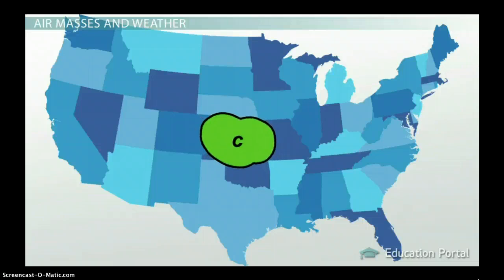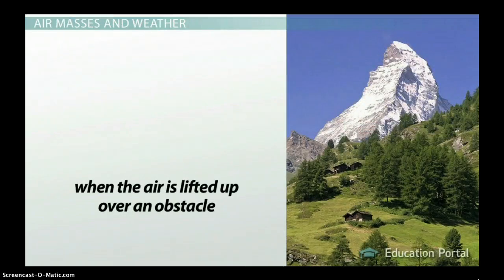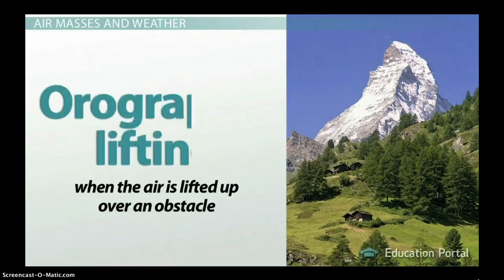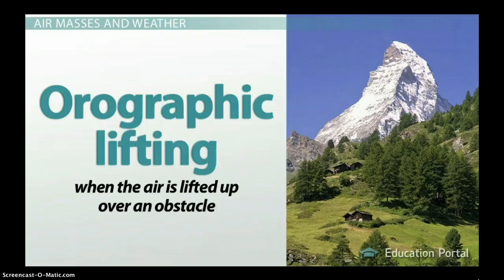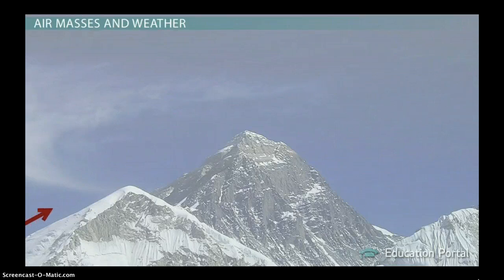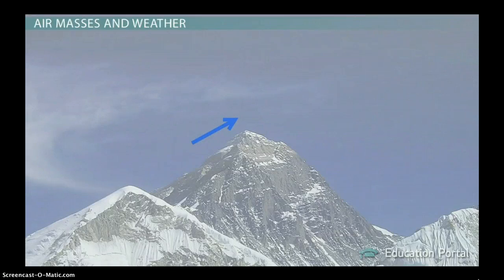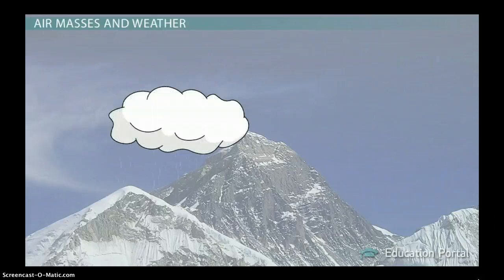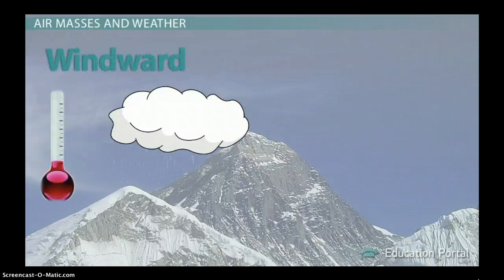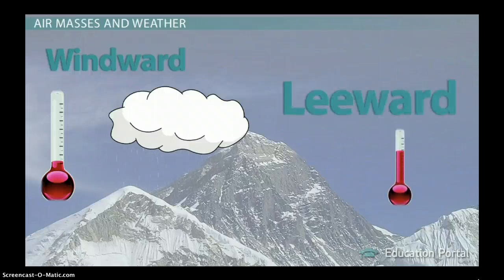Another way that air masses affect weather is when air is lifted up over an obstacle like a mountain. This type of lifting is called orographic lifting. Orographic lifting is responsible for the different weather conditions you see on opposite sides of a mountain. As the air rises up over the mountain, it cools and expands, and any moisture in the air is pushed out, forming a cloud. If there's enough moisture, the cloud may produce rain on the windward side — the side the wind is traveling up. The leeward side is the opposite: the air falling back down is dry because it left all its water in the cloud on the other side.